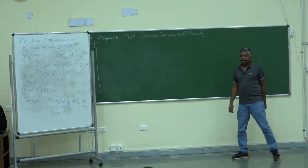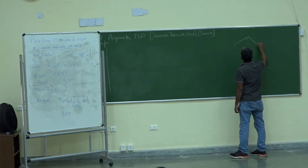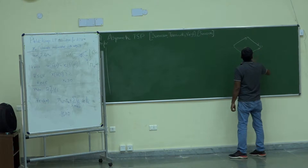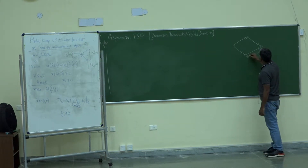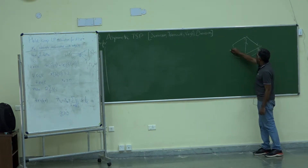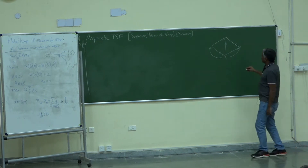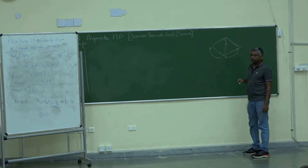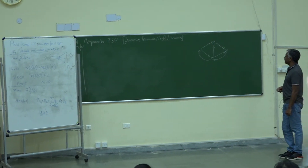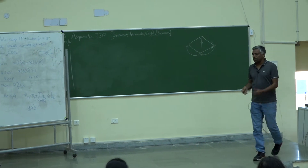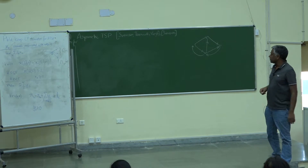If the graph given to you is a directed graph, let's assume that there is a tour. This is asymmetric if the edge weights are different, or not necessarily the same. So that's the asymmetric TSP. As before, we want to find a tour that visits all the vertices and has some minimum possible cost.